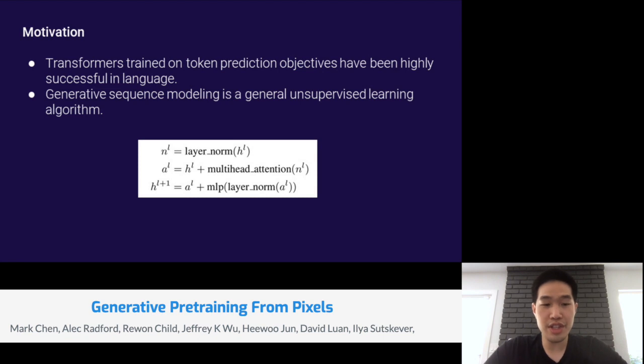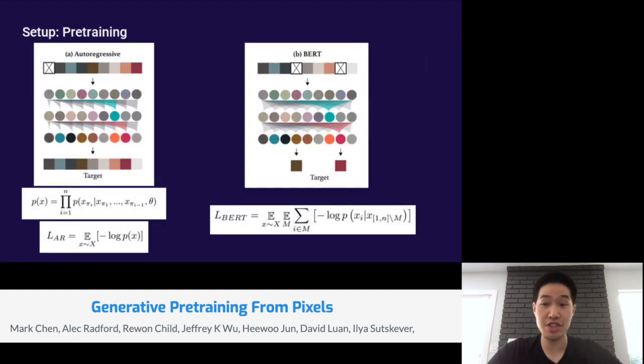This also means that we deliberately chose to forego hand coding any image-specific knowledge in the form of convolutions or techniques like relative attention, sparse attention, or 2D position embeddings.